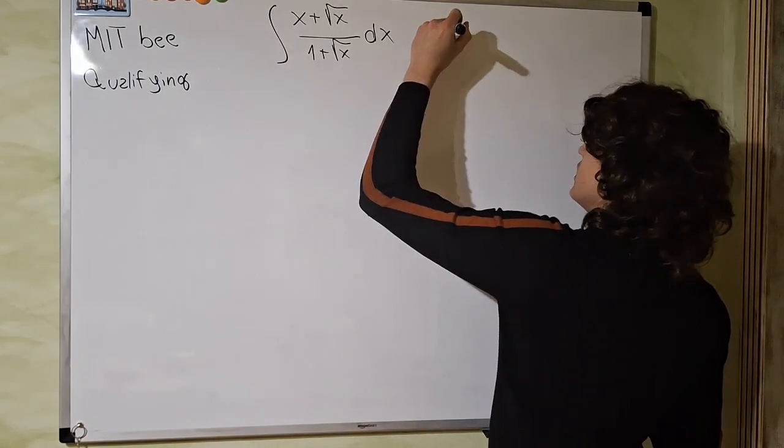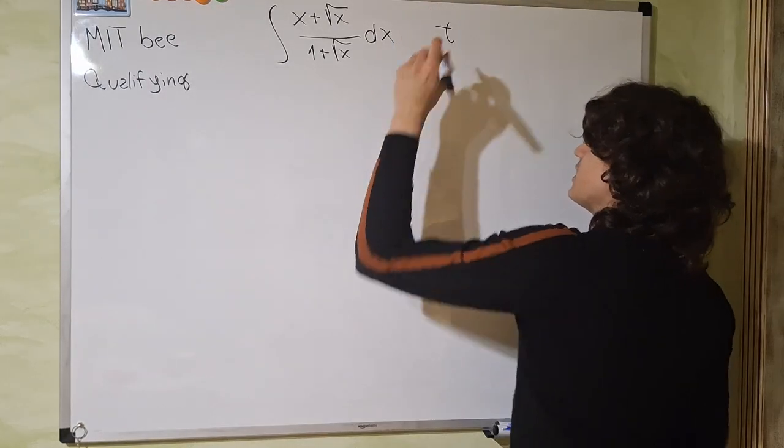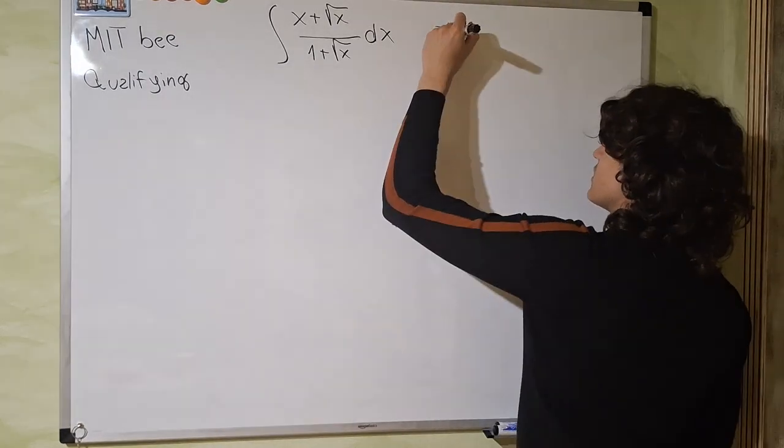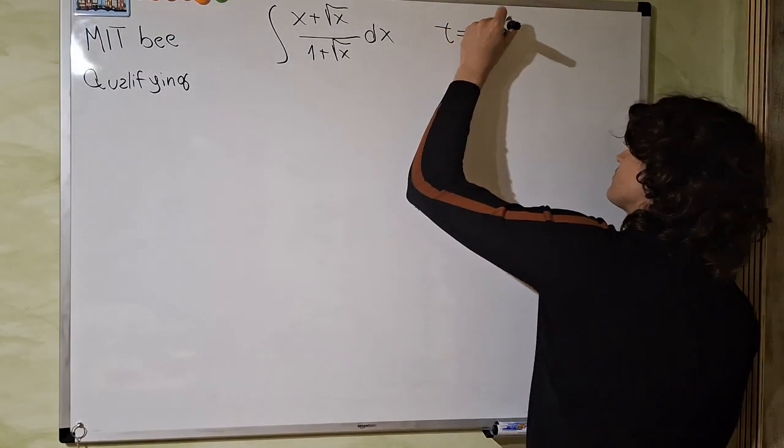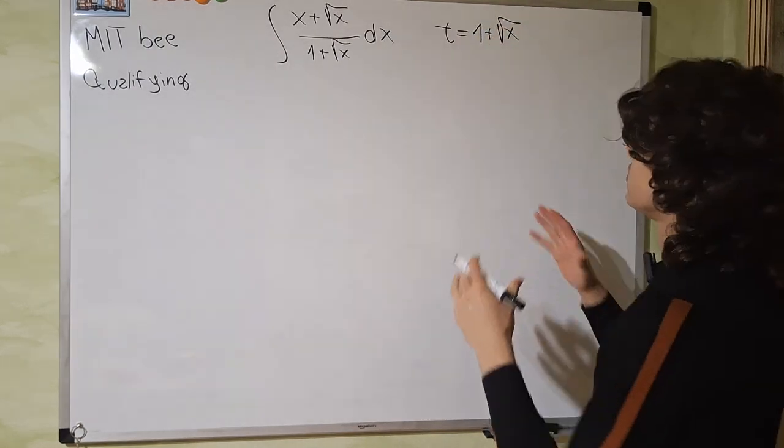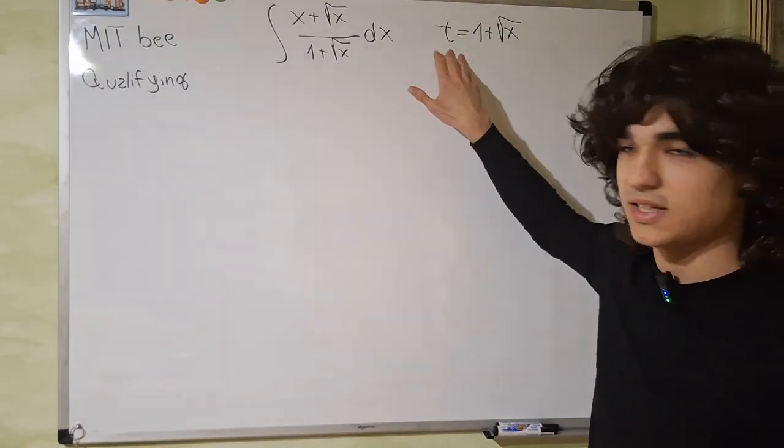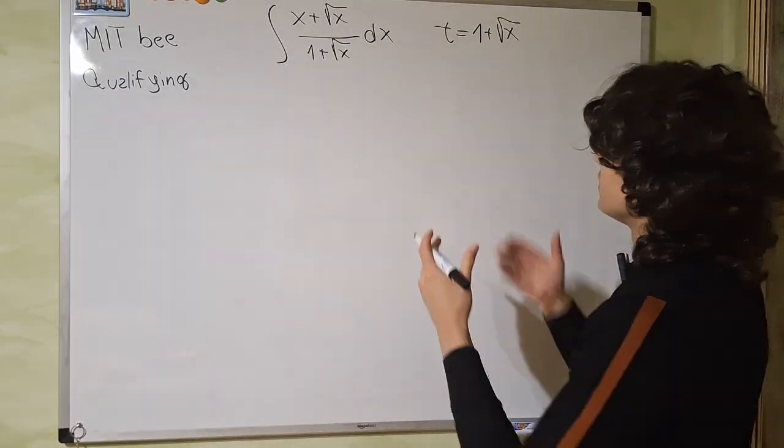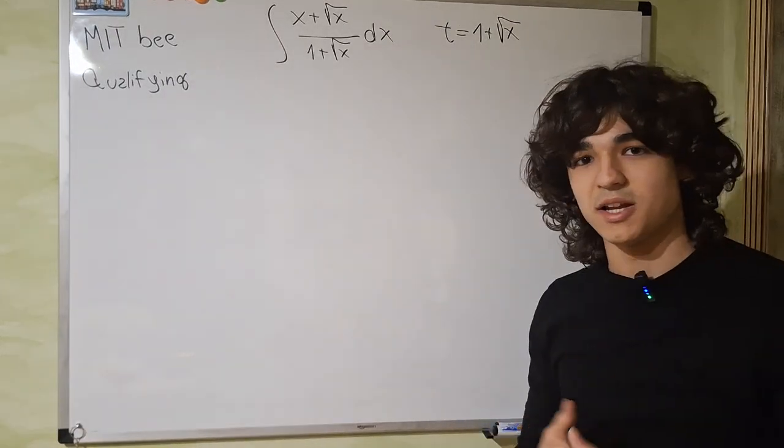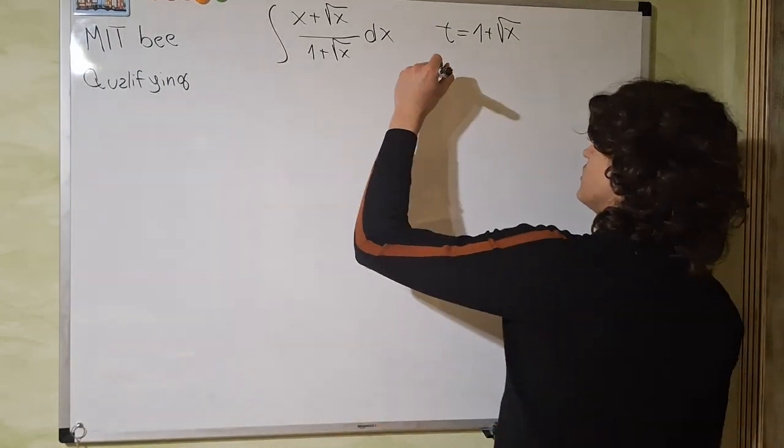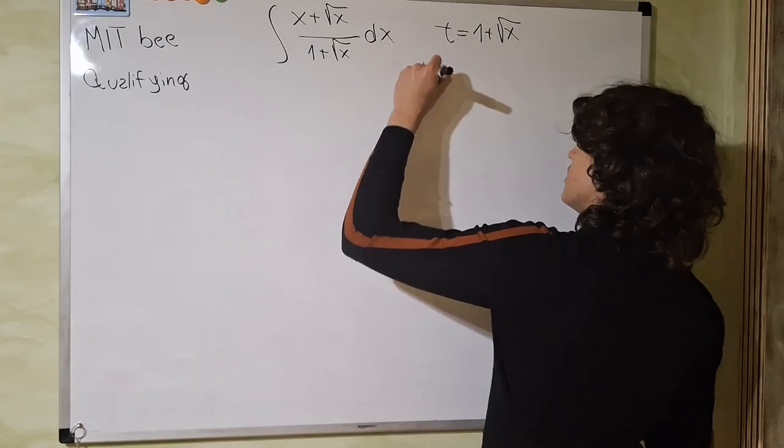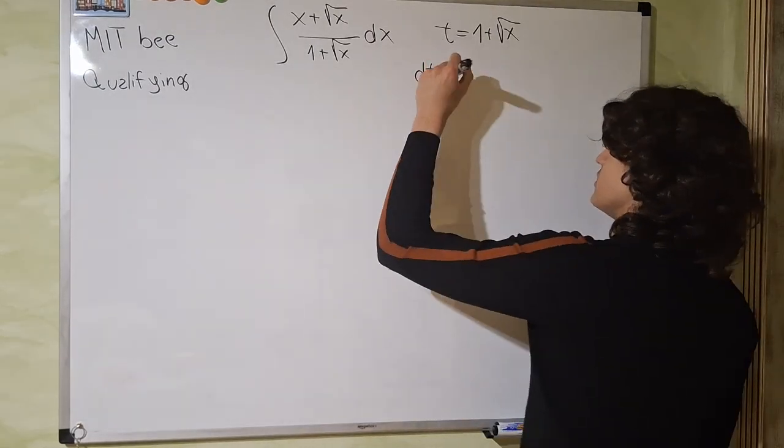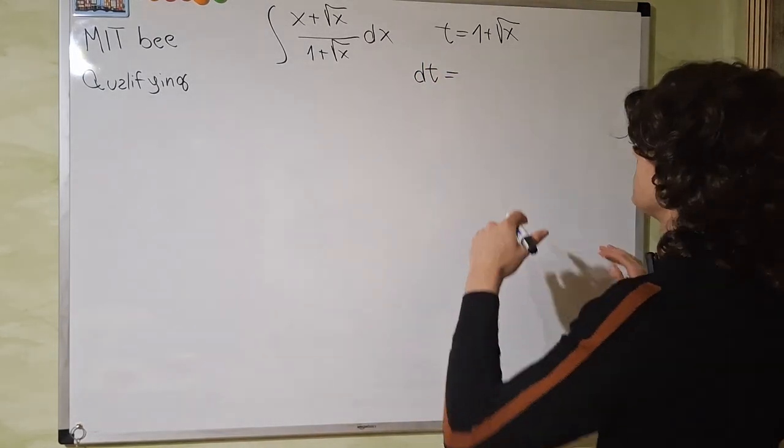So the first thing we're going to do is to just take 1 plus the square root of x and merge it into this variable t. Now we have to find what dt is. So we need to replace the differential and we're doing it in the following way. Just find the derivative of dt with respect to x.